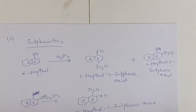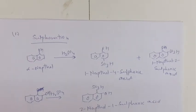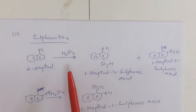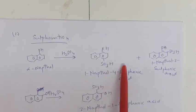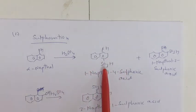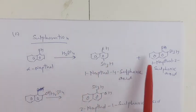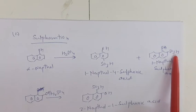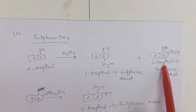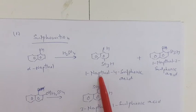The sulfonation of alpha naphthol with sulfuric acid gives 1-naphthol-4-sulfonic acid, in which the SO₃H group is attached at the fourth position (para position). It also gives 1-naphthol-2-sulfonic acid, in which the SO₃H group is attached at the ortho position — this is the minor product. This is an electrophilic substitution reaction in which SO₃ attacks on the aromatic ring and we get the substituted sulfonic acid compound.